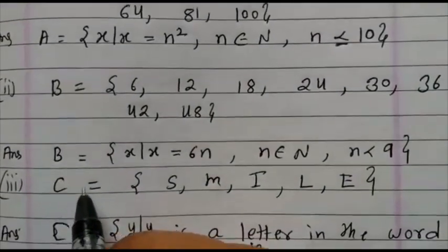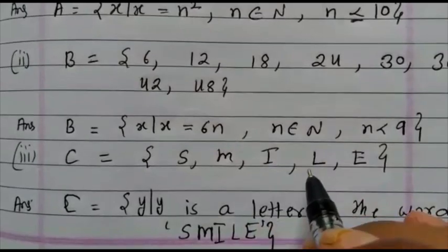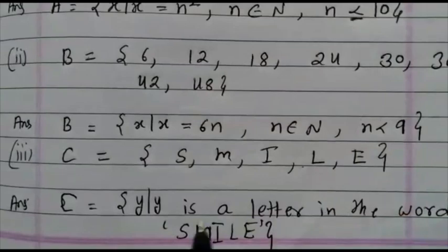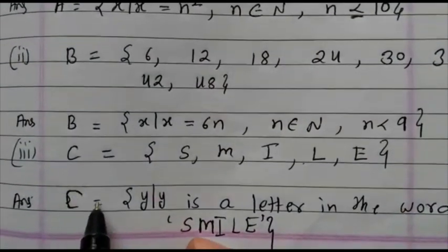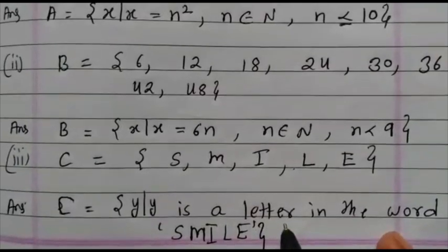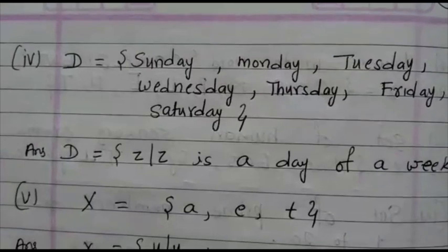Next question. C equals s, m, i, comma, l, comma, e. That is the word smile. How to write? Set C equals y of y is a letter in the word smile, and close the bracket.